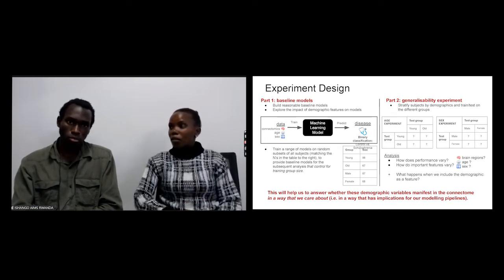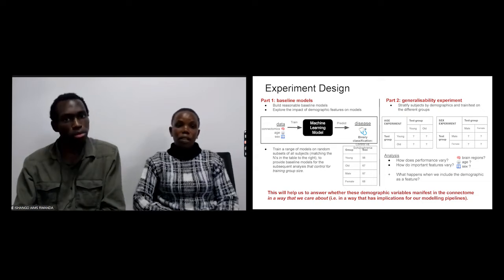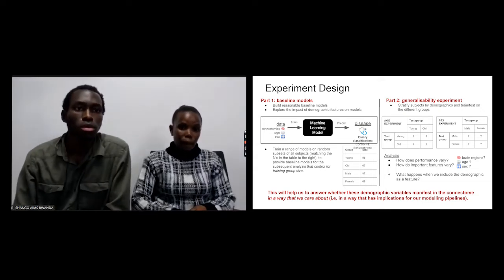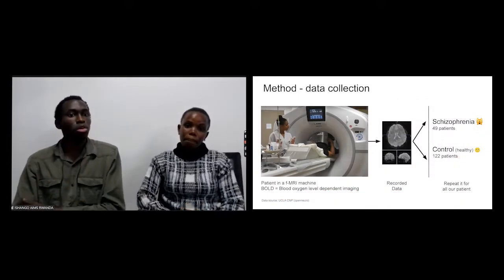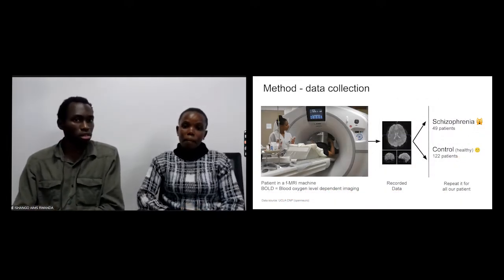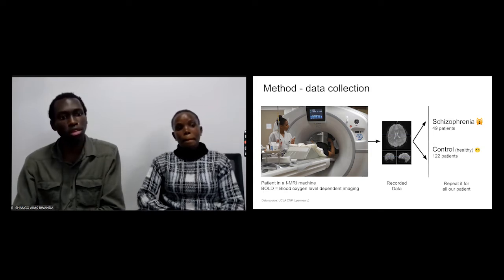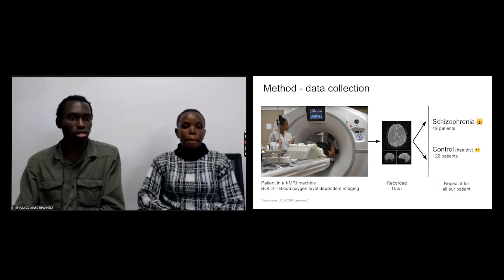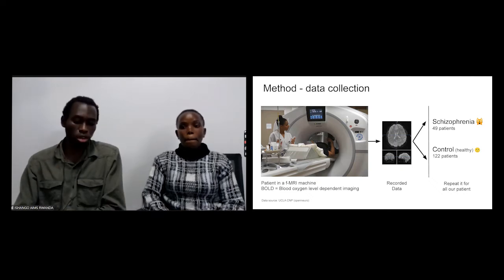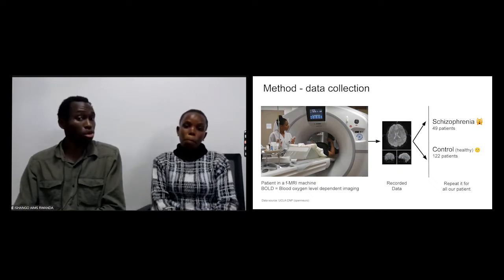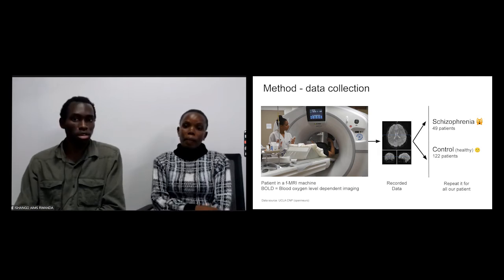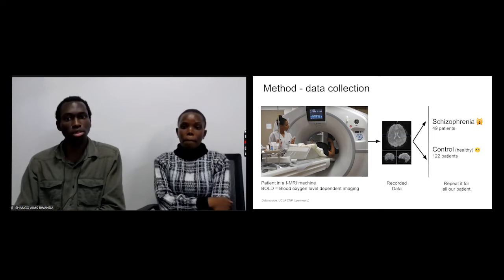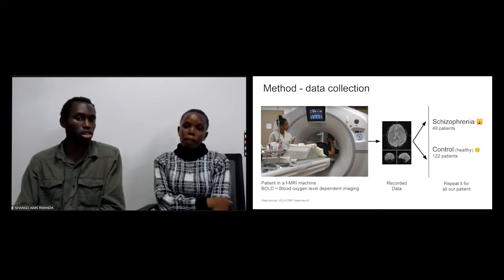The method of data collection: first we put some of our patients in an fMRI, functional magnetic resonance imagery, looking for blood oxygen level in the brain. Then we collected data, and we did it for 49 patients with schizophrenia and 122 healthy patients.